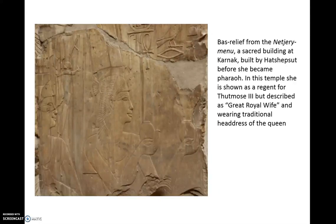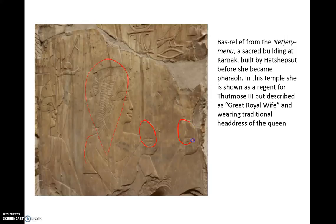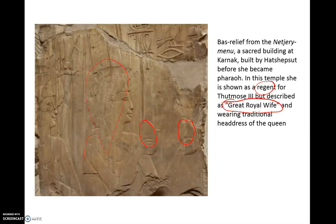Here we start to see a little bit of a shift. Hatshepsut is wearing the neckbed headdress — the vulture headdress of a great royal wife — and she has the petite shoulders and arms of a typical woman. But here she is providing incense, offering up incense jars to Amun, which is the kind of thing that normally the king would do. This is actually a relief from the temple Netjeri Menyu at Karnak, showing her as a regent. By this stage she still looks like a great royal wife and is described as such, but she's starting to do the kingly duties — though she doesn't yet look like a king, which would be normal for a regent.